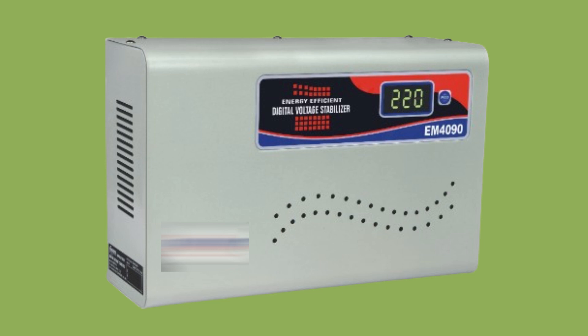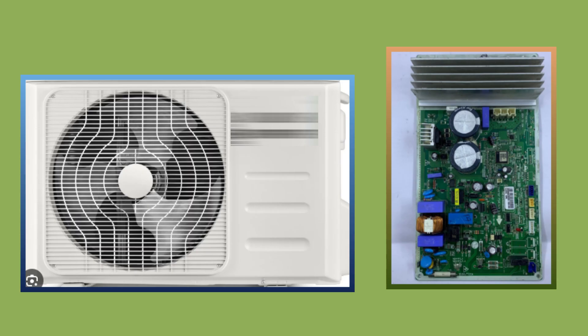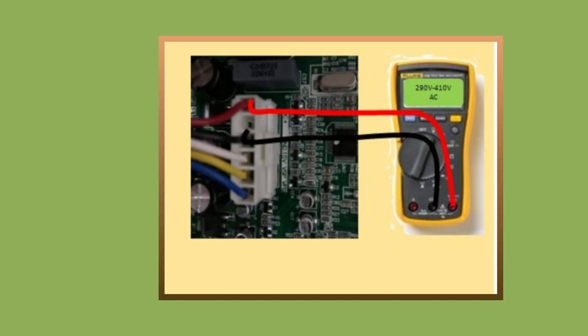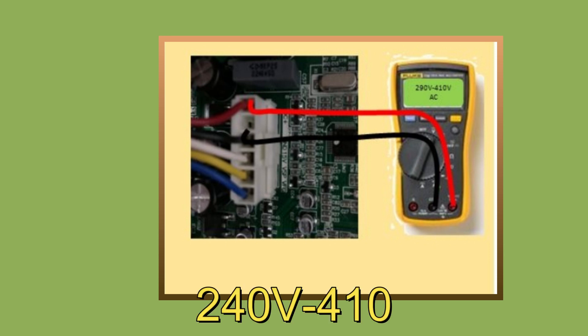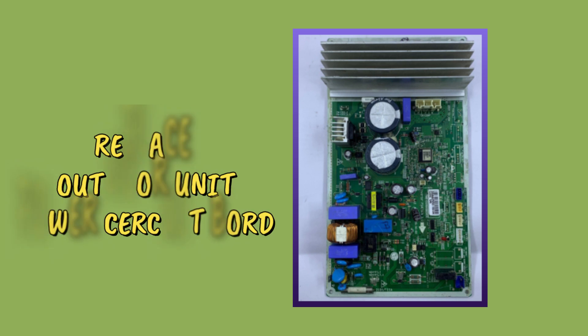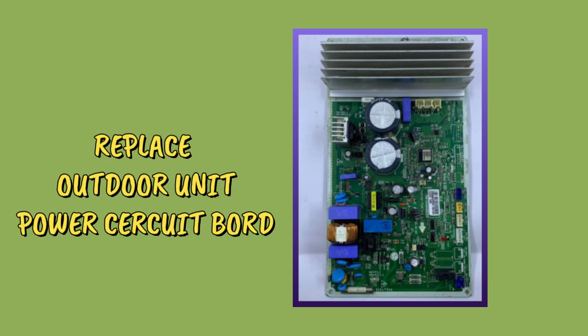Open the PCB of the outdoor unit by turning off the main switch, then turn on the AC and check the voltage at the connector of the fan motor. If the voltage is too low or too high — the normal range is 240 volts to 410 volts — then your outdoor PCB is bad and you have to replace the PCB of the outdoor unit. This error will be completely resolved after replacing the PCB.